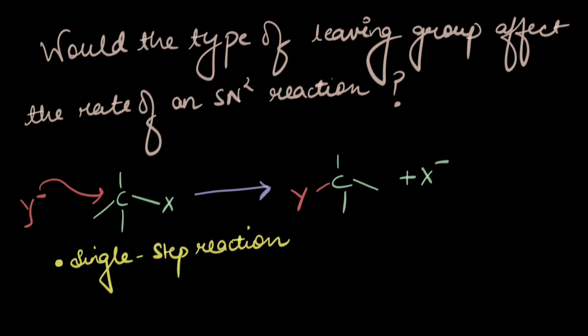So yes, the type of the leaving group is going to affect the rate of an SN2 reaction.